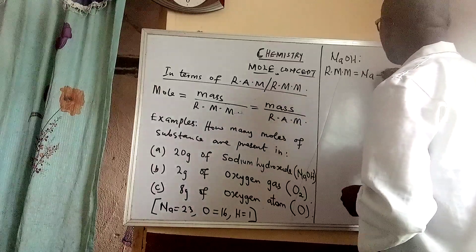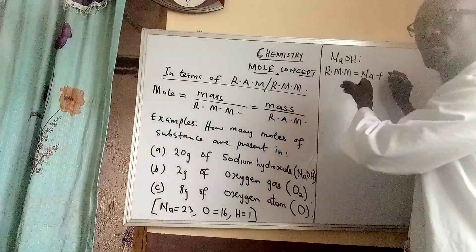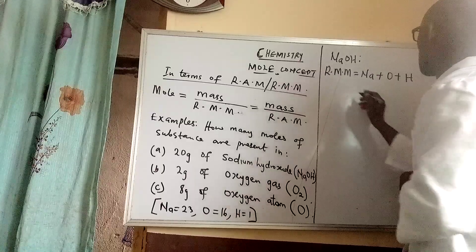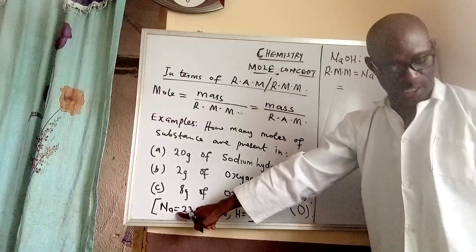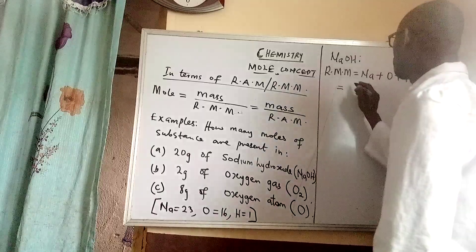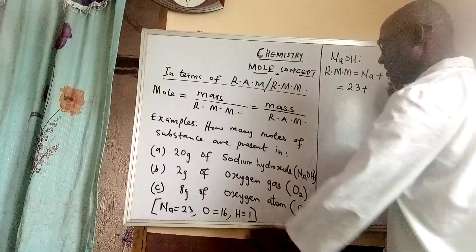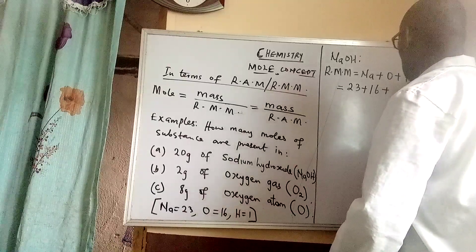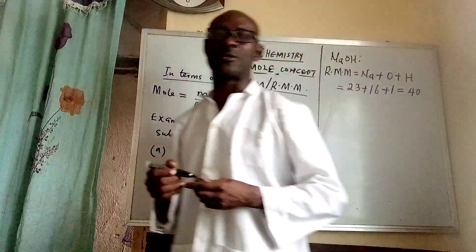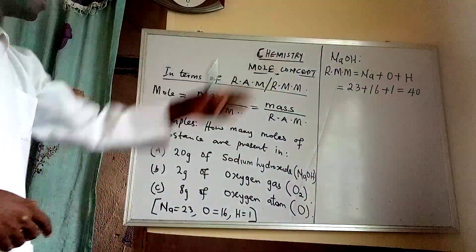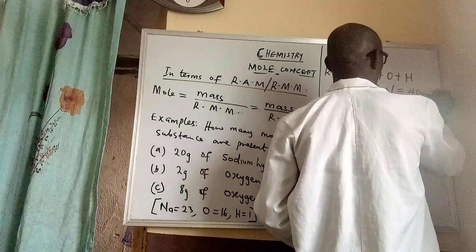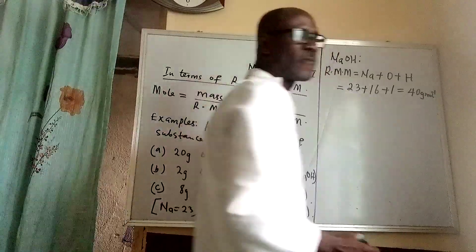The relative molecular mass is found by adding the atomic masses of the constituent elements together. Sodium is given as 23, oxygen is 16, hydrogen is 1. When added we get 40 — that is the relative molecular mass of sodium hydroxide, which is 40 grams per mole.